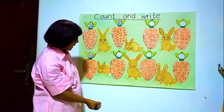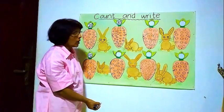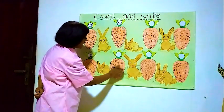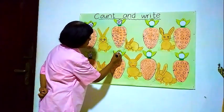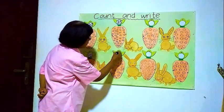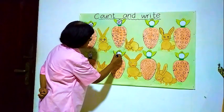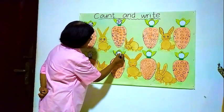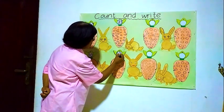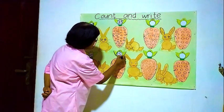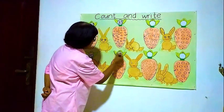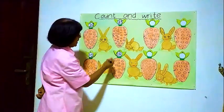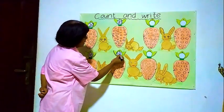There are eighteen balls inside this carrot. How to write eighteen? One, eight. One, eight.